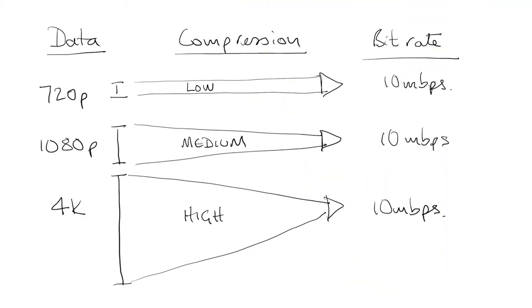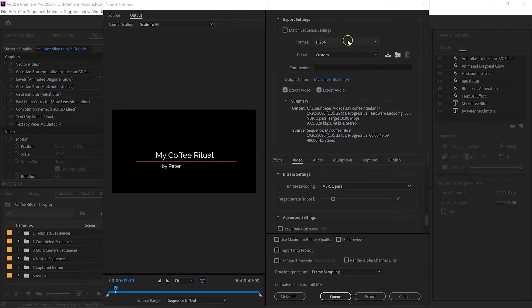This means that the amount of compression needed to achieve a given bitrate will vastly increase the higher the resolution and the higher the frame rate. A 60 frames per second 4K video will need to be compressed 8 times more than a 30 frames per second 1080p video to achieve the same bitrate. So you need to choose a higher bitrate to avoid degrading the quality of your video with higher resolutions.